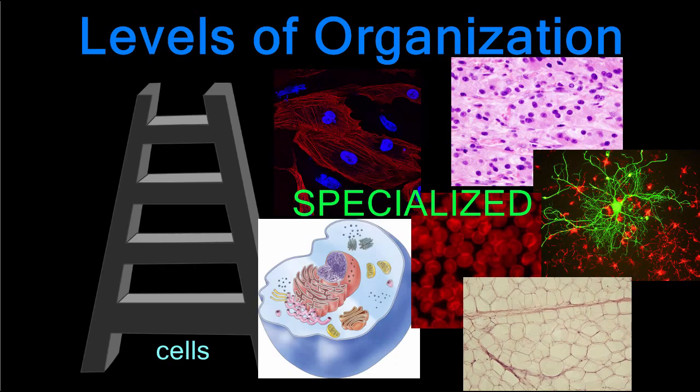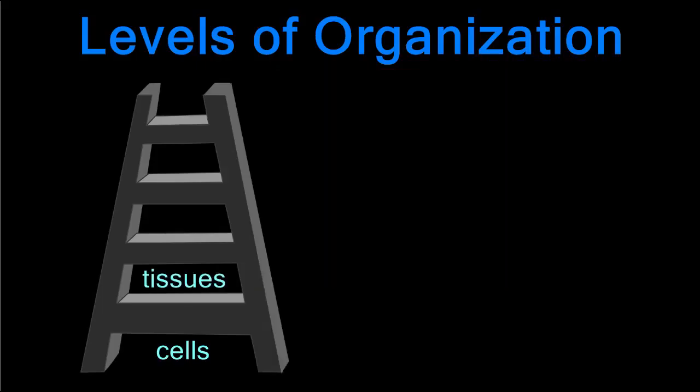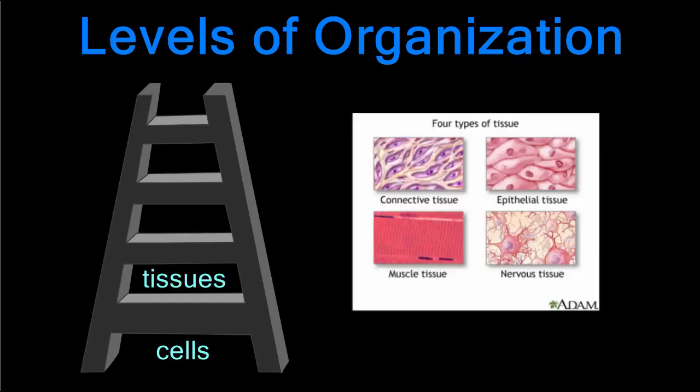Multicellular organisms, on the other hand, have many specialized cells that each perform a single task and depend on the other cells in the body to complete the remaining tasks for survival. The cells in this case are team players — specialized and interdependent. If even one group of cells fails, it could spell disaster for the whole organism.